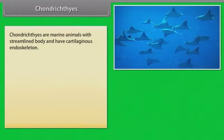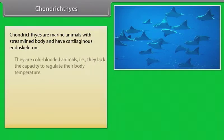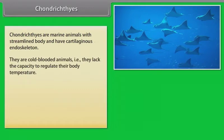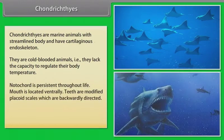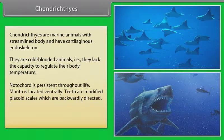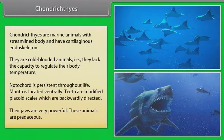Chondrichthyes. Chondrichthyes are marine animals with streamlined body and cartilaginous endoskeleton. They are cold-blooded animals; that is, they lack the capacity to regulate their body temperature. Notochord is persistent throughout life. Mouth is located ventrally. Teeth are modified placoid scales, which are backwardly directed. Their jaws are very powerful. These animals are predaceous.